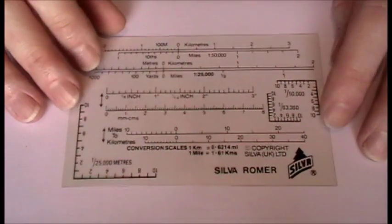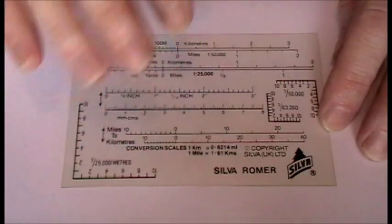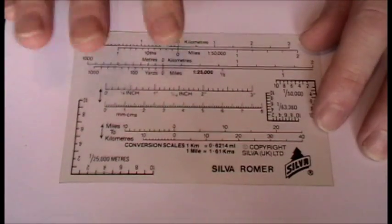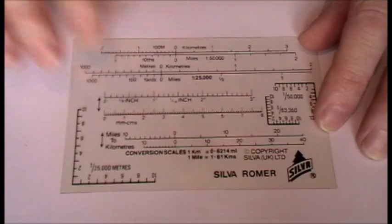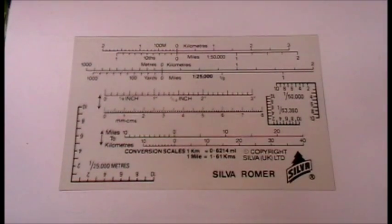An actual compass has the compass housing and everything, but on a romer all you've got is the scales and the measures. So that's it.